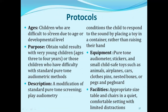Play audiometry protocols are designed for children who are difficult to screen due to age or developmental level. The purpose is to obtain valid results with young children aged 3 to 4 years and those who have difficulty with standard pure tone audiometric methods. The child is conditioned to respond to sound by placing a toy in a container rather than raising their hand. Equipment needed includes a pure tone audiometer, stickers, small child-safe toys such as animals, airplanes, and cars, clothespins, and nested boxes or peg boards. An appropriately sized table and chair with limited distractions are required.